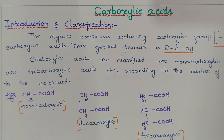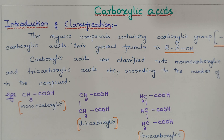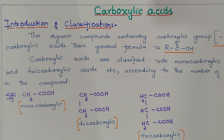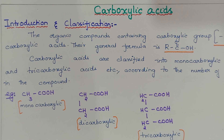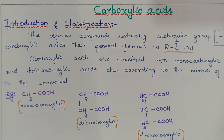Carboxylic acids come under organic chemistry. When do we call an organic compound a carboxylic acid? It should contain a functional group called the carboxylic group. What is the carboxylic group? It is a C double bond O, OH group. The organic compound which contains the carboxylic group, that is COOH, as its functional group is called a carboxylic acid.